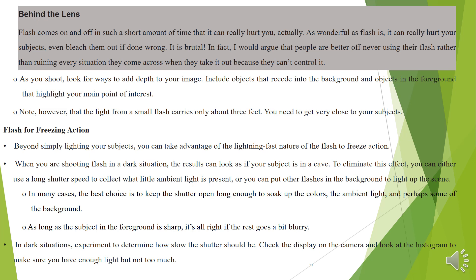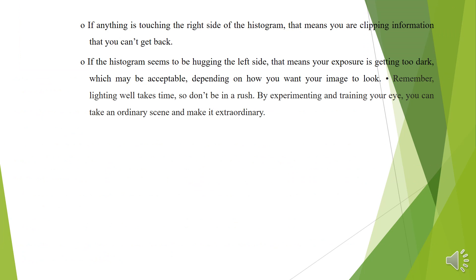In dark situations, experiment to determine how slow the shutter should be. Check the display on the camera and look at the histogram to make sure you have enough light but not too much. If anything is touching the right side of the histogram, that means you are clipping information that you can't get back. If the histogram seems to be using the left side, that means your exposure is getting too dark, which may be acceptable depending on how you want your image to look. Remember, lighting well takes time, so don't be in a rush. By experimenting and training your eye, you can take an ordinary scene and make it extraordinary.